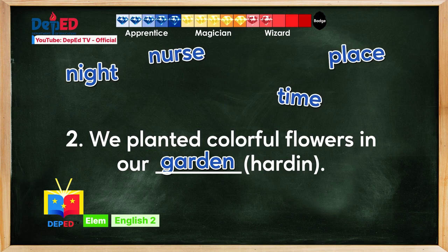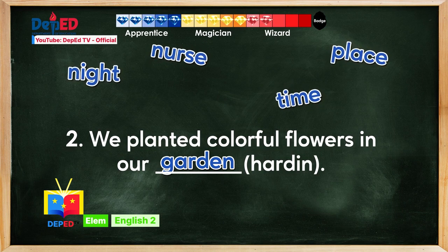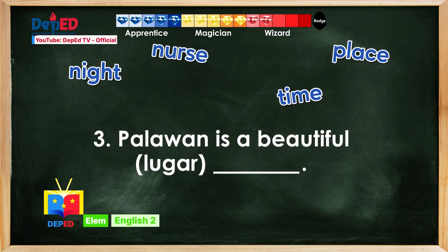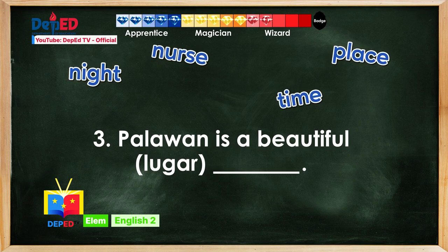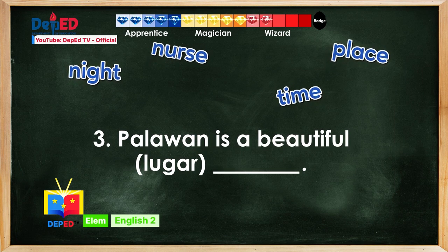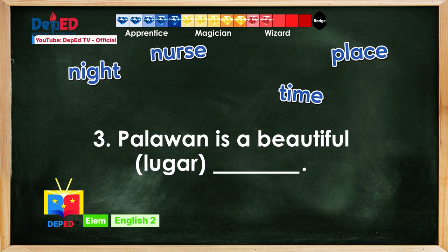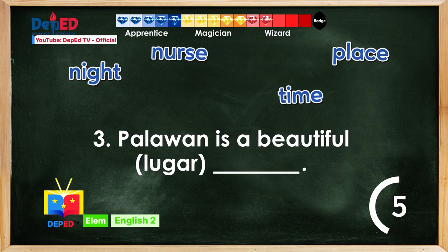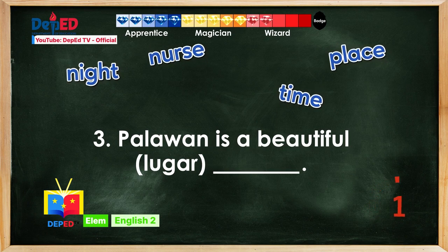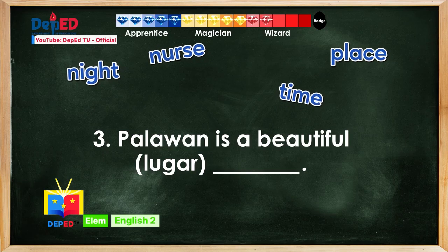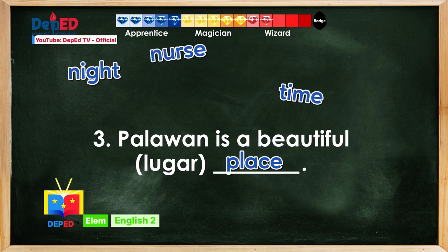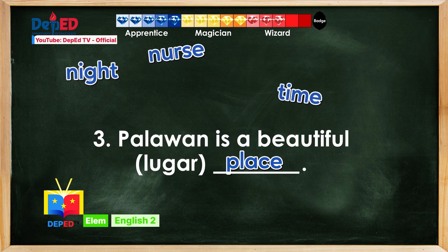Third sentence: Palawan is a beautiful blank. Choose the correct answer from the pool of words. Time is up — quick, tell me your answer. Fantastic! The correct English equivalent of the Filipino word lugar is place. Let us read the sentence: Palawan is a beautiful place.